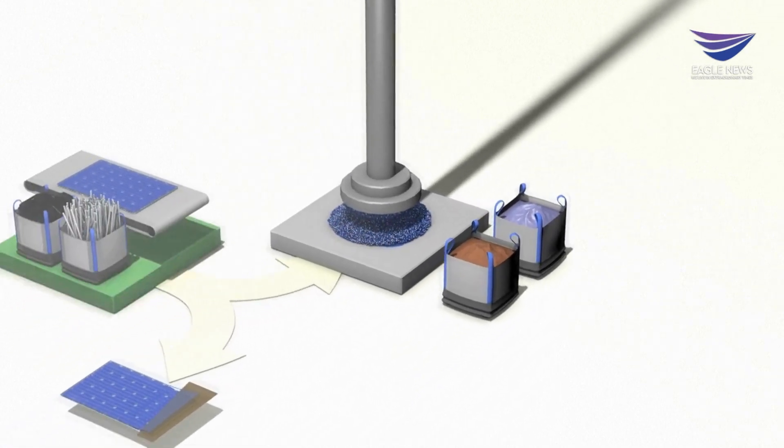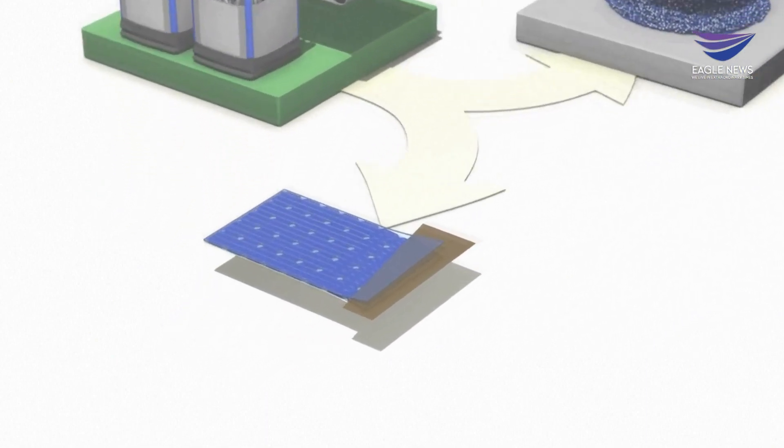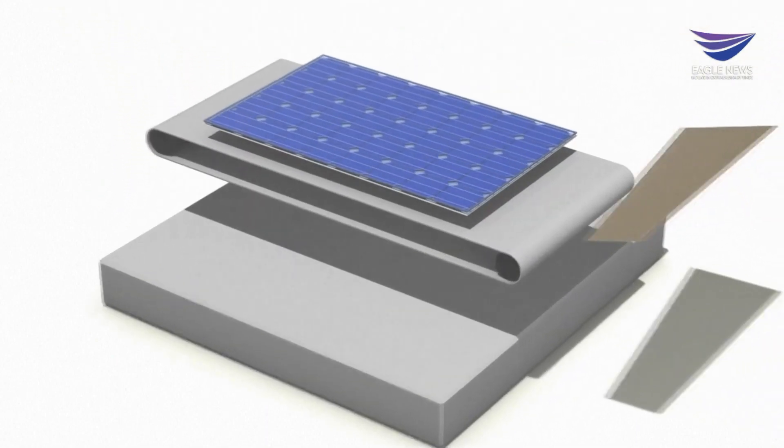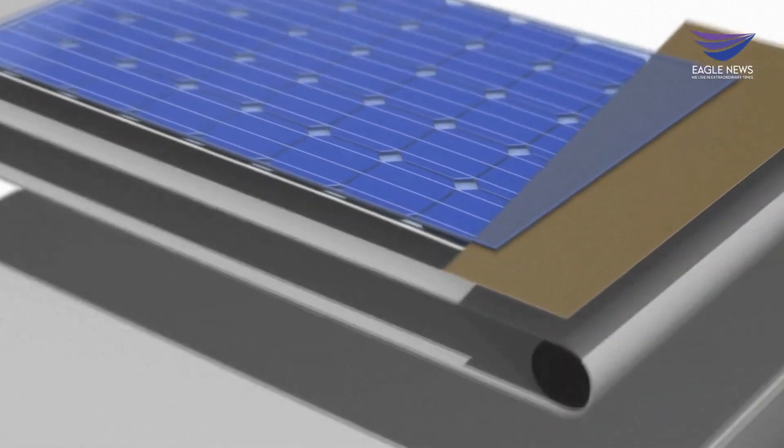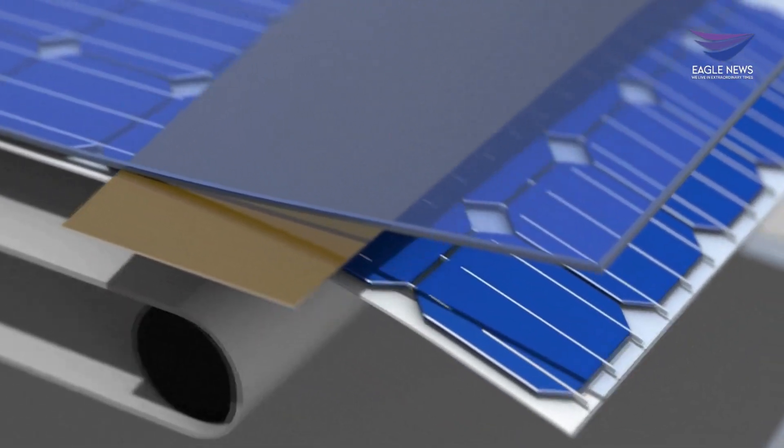which allows a higher level of purity in the recovery process. A blade heated to 300 degrees Celsius cuts the panel along its length to separate the glass from the photovoltaic cells.